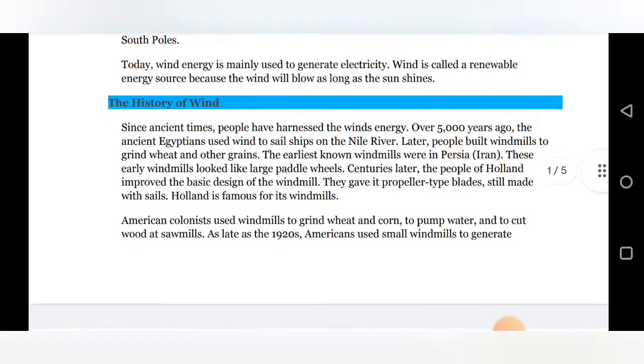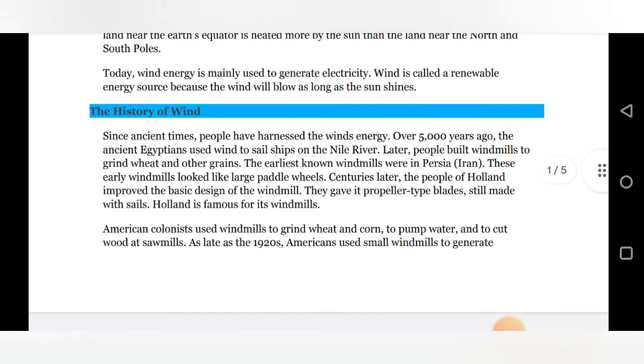So the history of wind. Since ancient times, people have harnessed the wind energy. Over 5000 years ago, the ancient Egyptians used the wind to sail the ships on the Nile rivers. Later, people built windmills to grind wheat and other grains. The earliest known windmills were in Persia. These earlier windmills looked like large paddle wheels. Centuries later, the people of Holland improved the basic design of the windmill. They gave it propeller type blades, still made with sails.